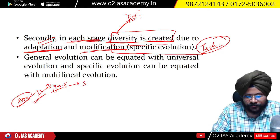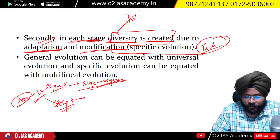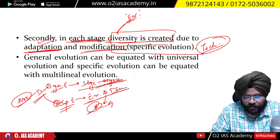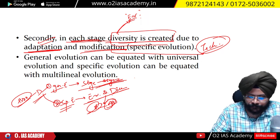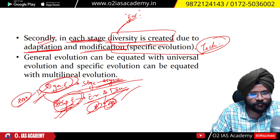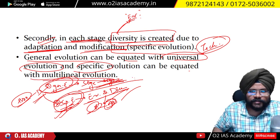The first character is the general character — known as general evolution — where evolution goes from one stage to another. The second character is specific evolution, because the environment is diverse in different parts of the world, so each culture modifies its technology accordingly. The general evolution can be equated with universal evolution, and specific evolution can be equated with multilineal evolution.